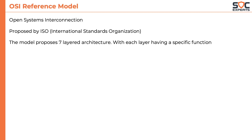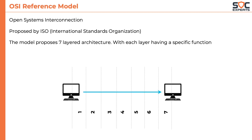The model breaks down network communication into seven different layers, each layer having a specific function. The model is called a reference model because it is used mostly from a theoretical perspective to break down and understand network communication. The seven layers are as follows.